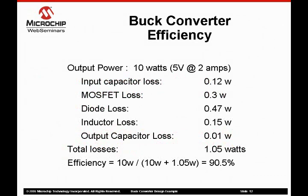This buck converter design example has a calculated efficiency of 90.5%. The diode losses represent almost one-half of the total losses. If the diode's forward voltage drop can be lowered, the converter's efficiency can be raised. This buck converter design example is called an asynchronous buck converter because the diode commutation switching is independent of the MOSFET switching.